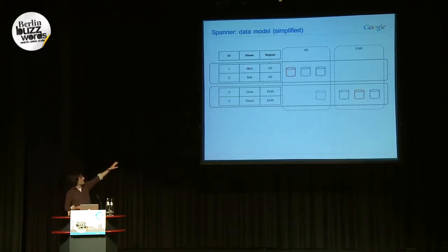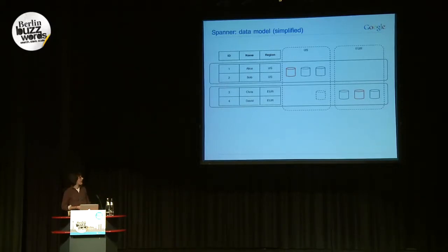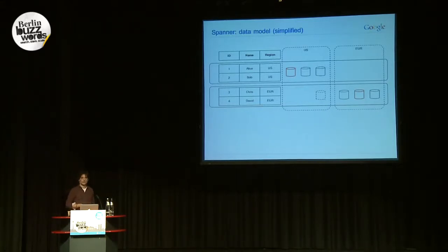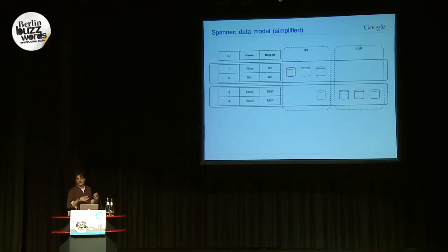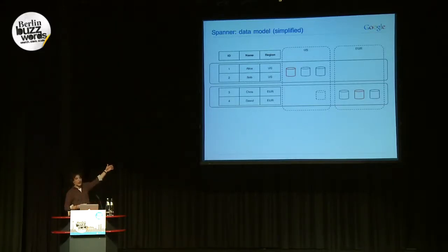Partition one has three replicas in the US, with the orange one as the Paxos leader. The other partition has three replicas in Europe with a read-only replica in the US — handy so that you get a write quorum in Europe. You're never blocking on transatlantic RPC calls in front of a user, but you can still query all of the data, albeit back in time a little bit, from the US.